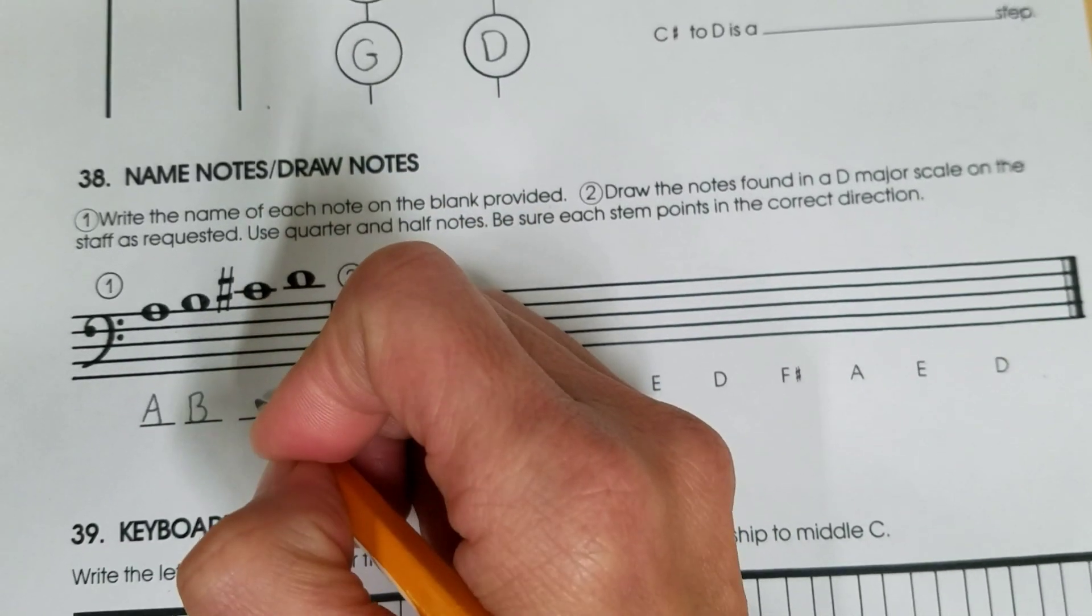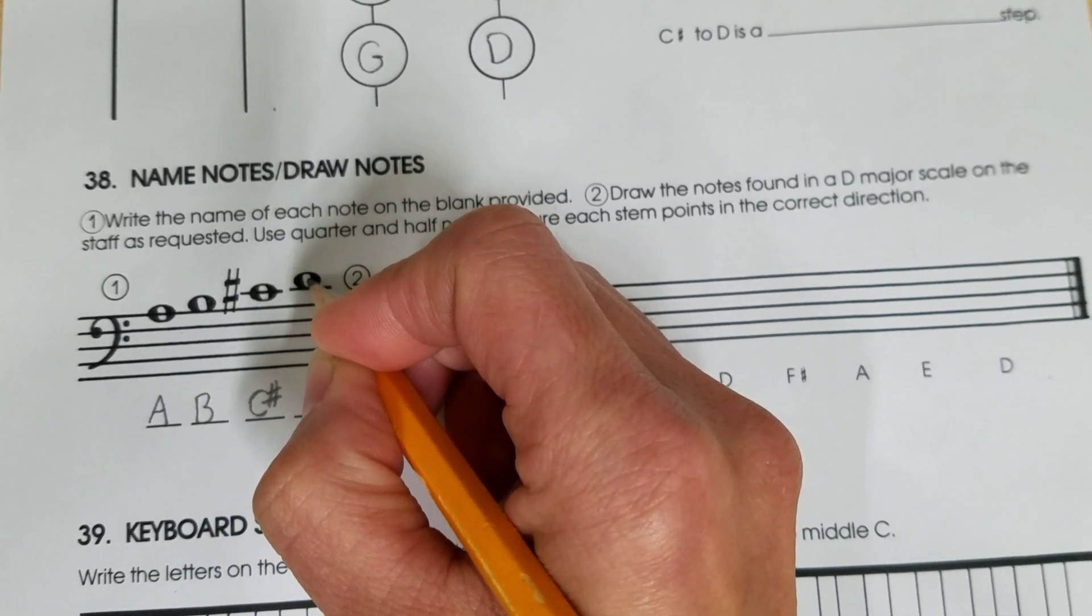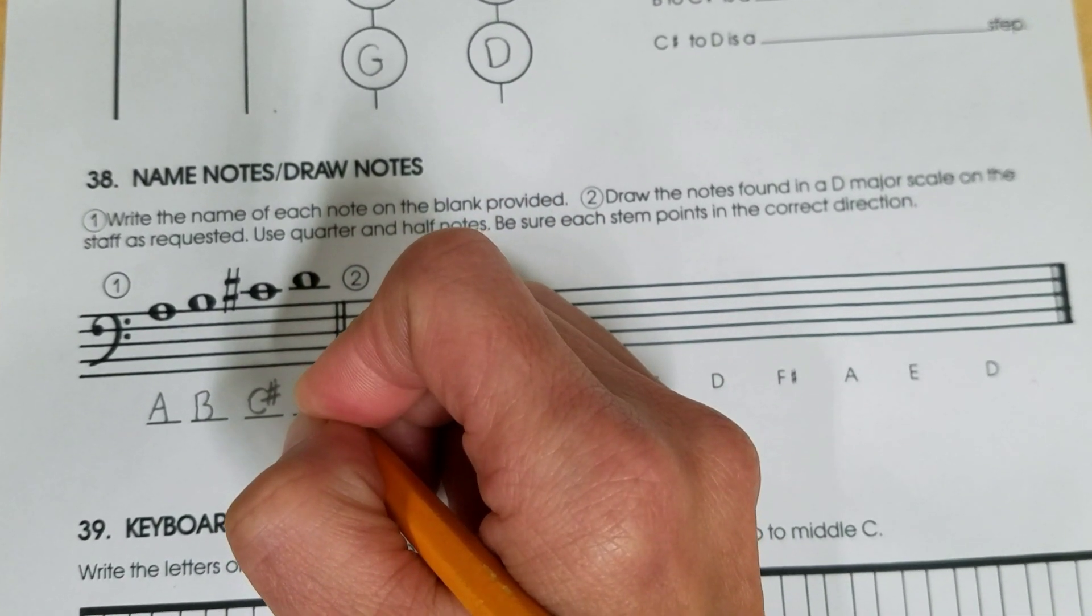One note higher, next letter of the alphabet: C sharp. And one note higher, next letter of the alphabet: D.